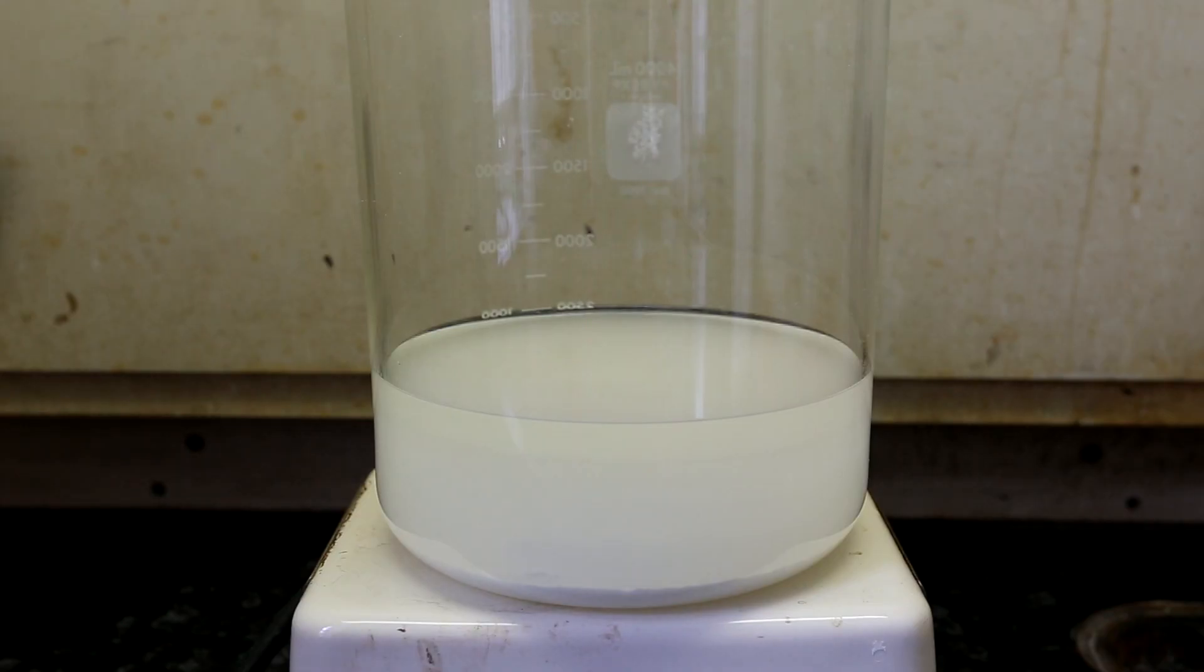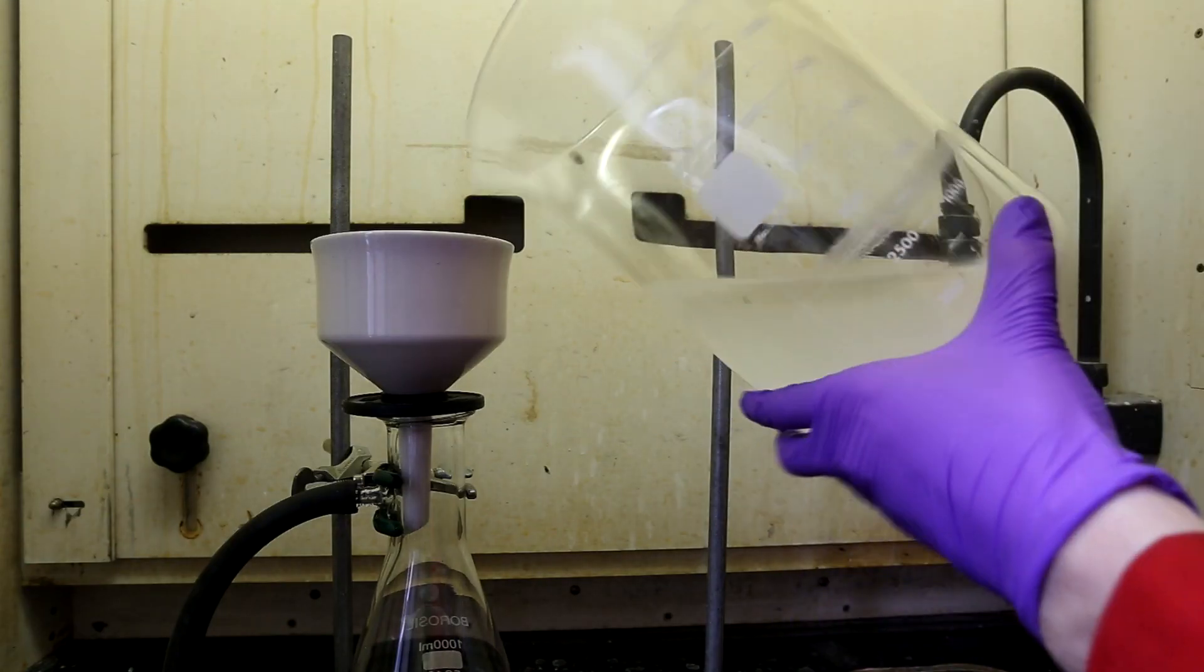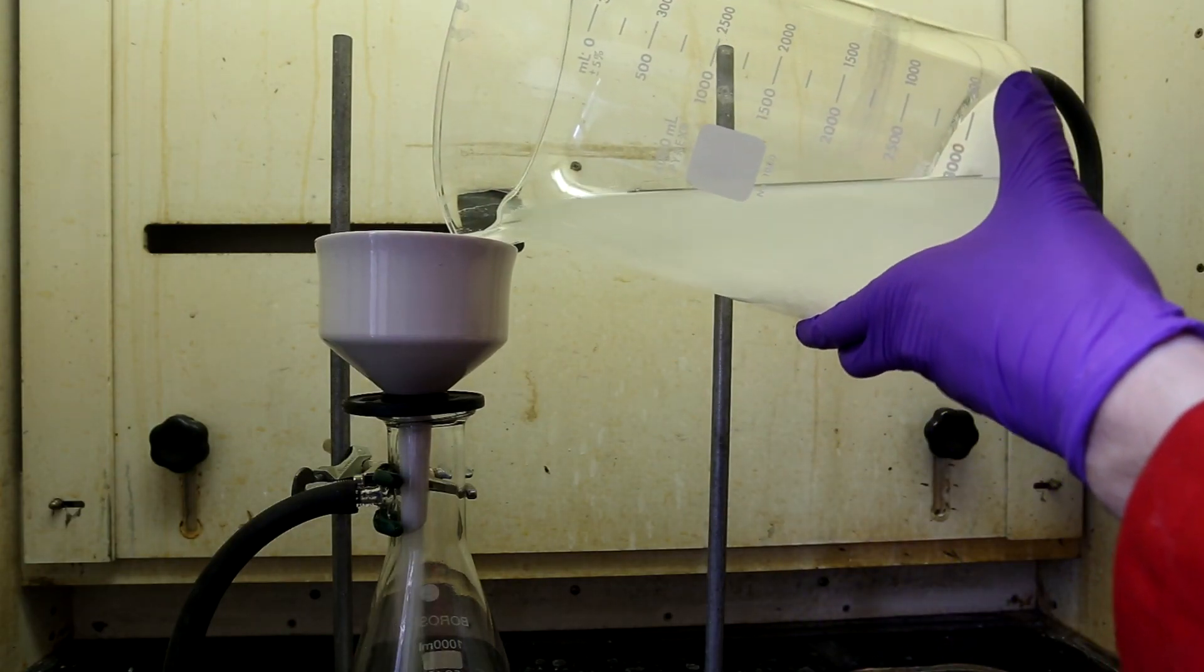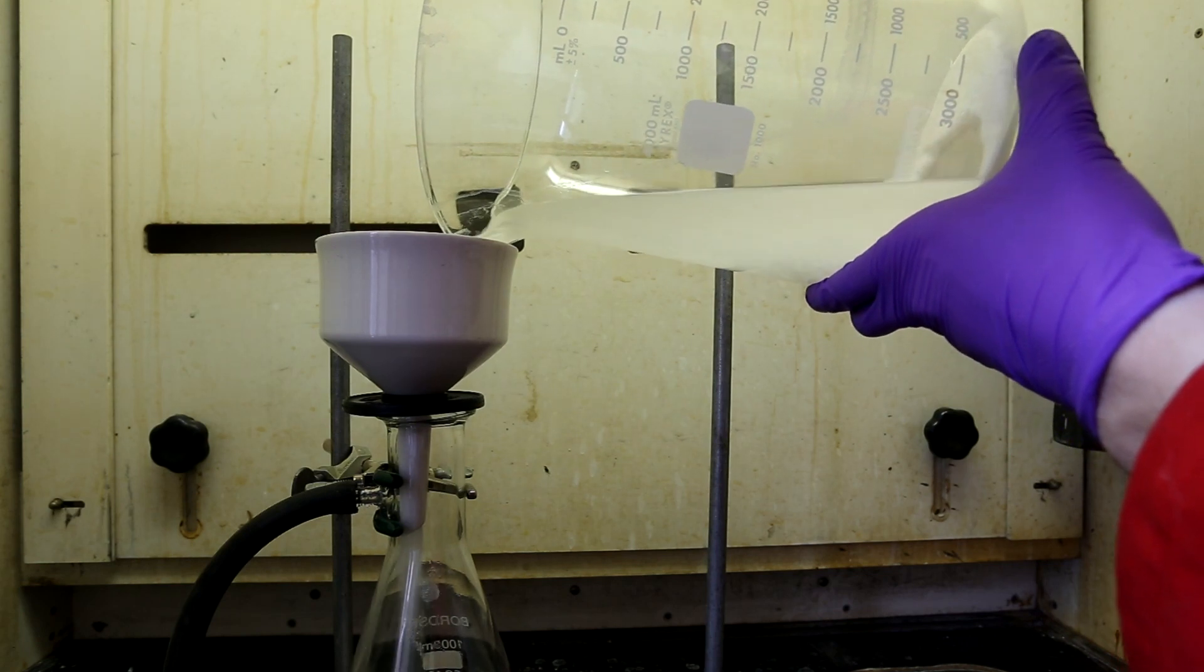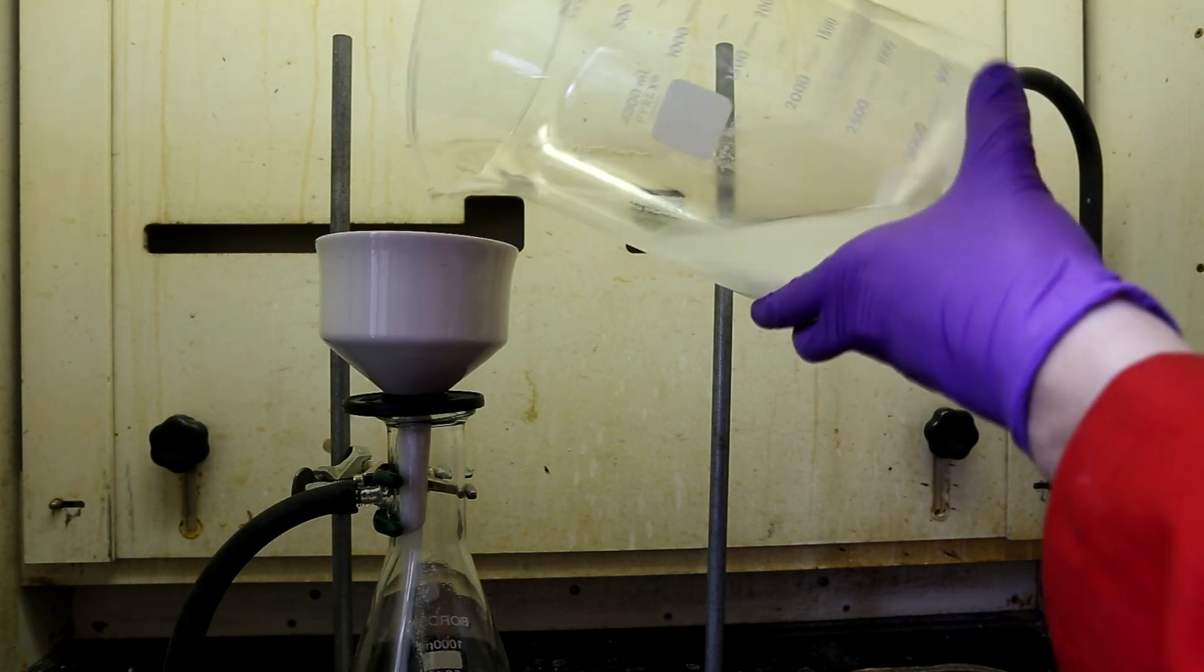I let the solution stand for about an hour to let a lot of the starch and cellulose sink to the bottom. I then vacuum filtered the solution and I washed the starch cellulose solid twice with 100 milliliters of acetone.